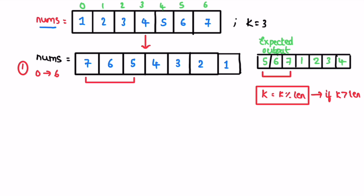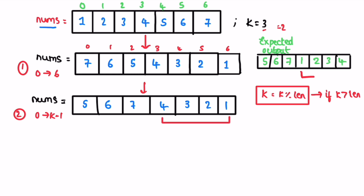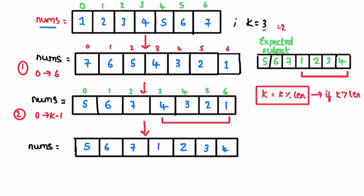In the second reversal, we reverse elements in the range 0 to k-1. Since k=3, k-1=2, so we reverse from index 0 to index 2. After this second reversal, the array is almost in the expected format. Now we have to reverse the remaining part — the expected output has 1,2,3,4 but we currently have 4,3,2,1 in those positions. In the third reversal, we reverse from index k to the end (index 6), i.e., from 3 to 6. After this, the array matches the expected output exactly.